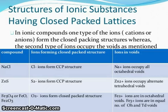Structure of ionic substances have closed packed lattices. In ionic compounds, one type of ion, cation or anion, forms the close packing structure, whereas the second type of ion occupies the voids as mentioned. Sodium chloride compounds: ions forming close packing structure. Chloride ions form CCP structure. Sodium ions occupy all octahedral voids.